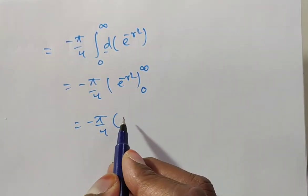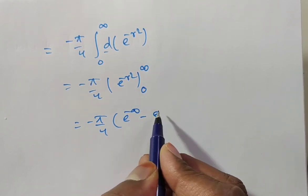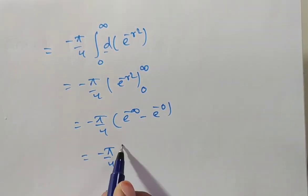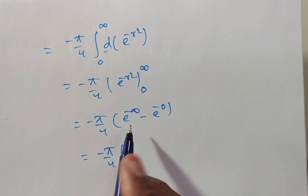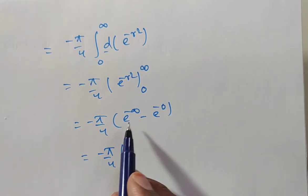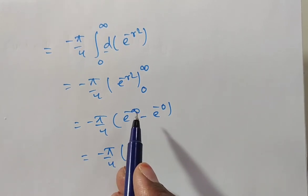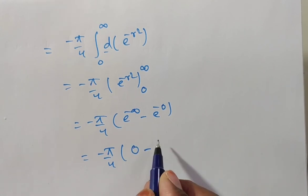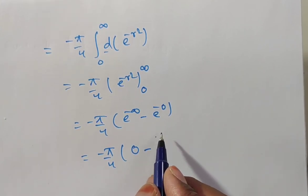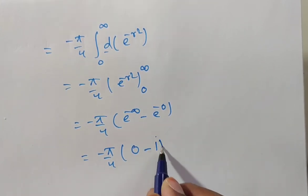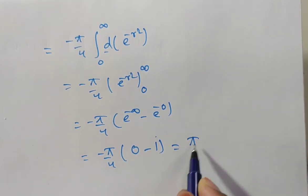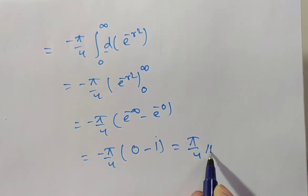So we have minus pi by 4. Substituting the upper limit: e to the power of minus infinity equals 1 by e to the power of infinity equals 0. Subtracting the lower limit: e to the power of minus 0 equals 1. So inside we have 0 minus 1, which is minus 1. Outside we have minus pi by 4, so minus pi by 4 times minus 1 gives the answer pi by 4.